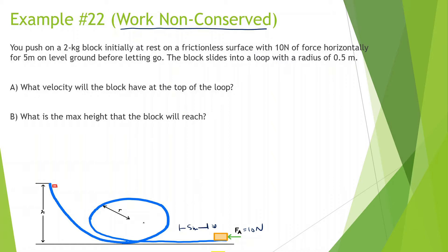The block slides into a loop with a radius of 0.5 meters. What velocity will the block have at the top of the loop? So we want to find, when the block is right at the top, how fast is it?